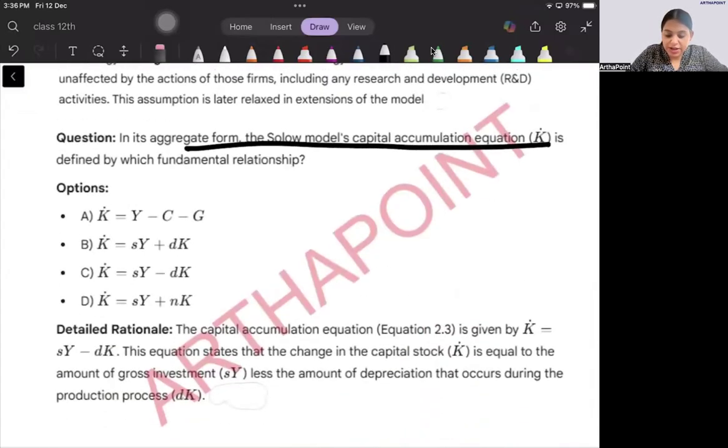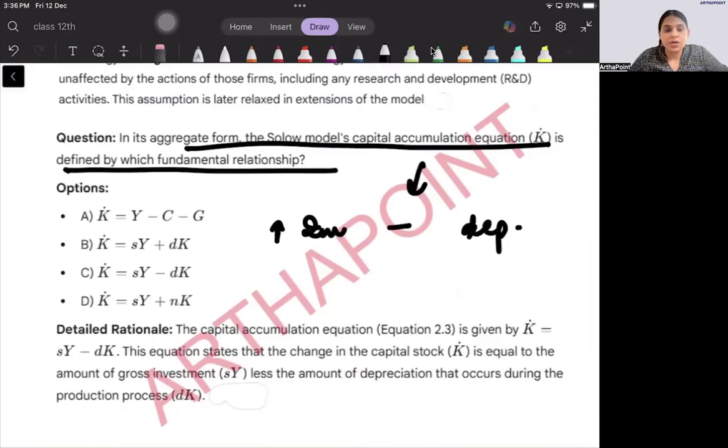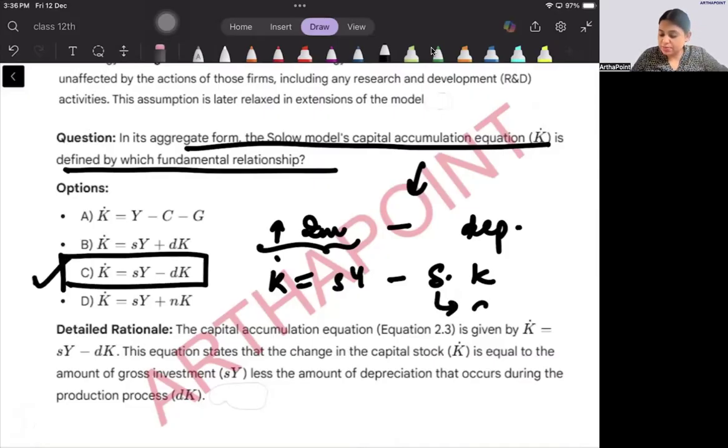In its aggregate form, Solow model capital accumulation K dot is explained by which relationship? K dot means change in capital. It increases due to investment and decreases due to depreciation. So we can say that this is going to be equation B: K dot is equal to investment, investment is savings, minus depreciation of capital. Not B, sorry, this is a plus sign C, where this is nothing but depreciation rate.